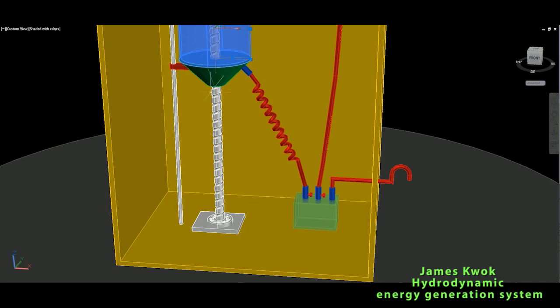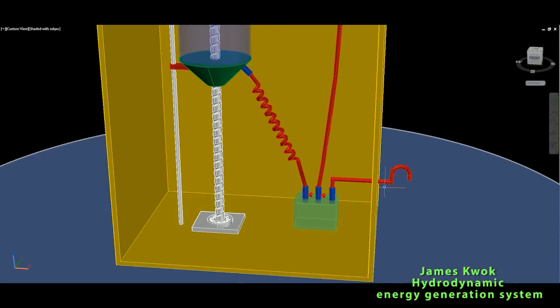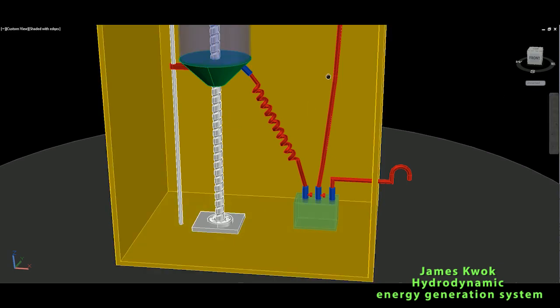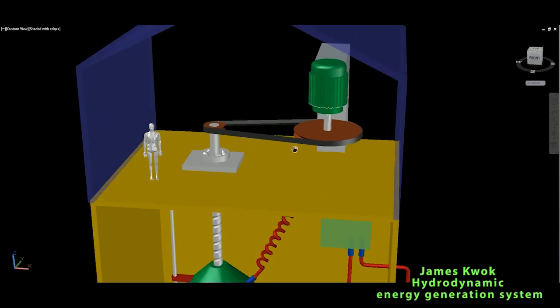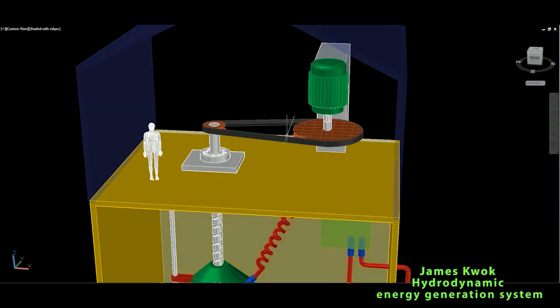This going down of the buoy will spin this mechanism. You see this some kind of thread is on the main column. By this buoy coming down, this will spin and the energy will be transferred to the generator on the top.